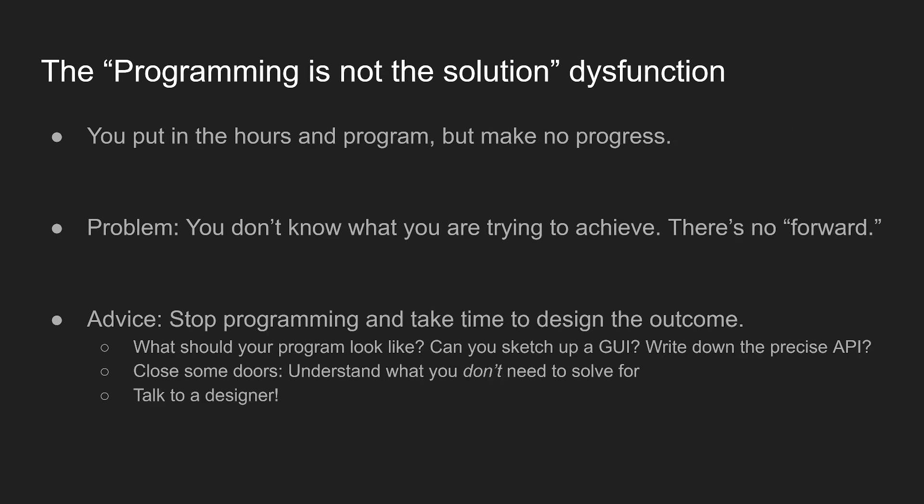Number four is the 'programming is not the solution' dysfunction. This is personally the one I run into the most. It looks like: you sit there and program for hours, but you make no progress. The problem is you don't really know what you're trying to do at all — you don't know what the goal is. There's no notion of 'forward,' and because there's no direction, there's no notion of progress. In these situations, the only thing you can do is stop programming and take the time to actually design what you want to do — you have to make decisions.